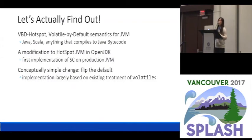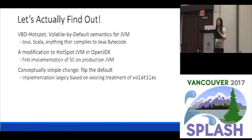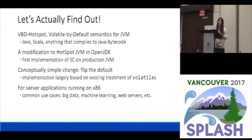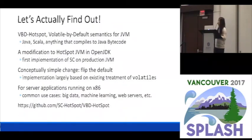To implement volatile by default, there is a conceptually simple change: we have to flip the default from non-volatile to volatile. Therefore, our implementation largely reuses the existing implementation of the volatile keyword in Java, and our correctness is also based on that. The focus of our performance evaluation is on server-side applications on x86, because this is a common use case of Java applications today — for example, web servers, big data processing, or machine learning workloads. The implementation is available on GitHub and it's been artifact evaluated.